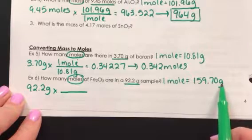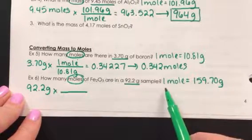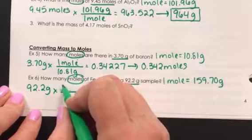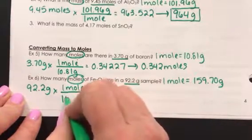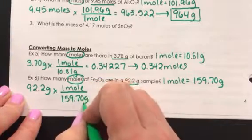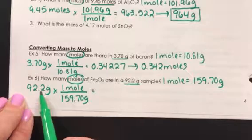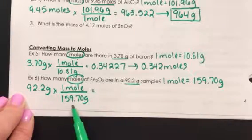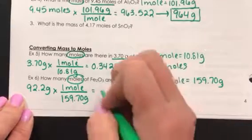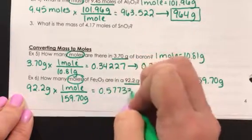We are, again, converting from grams to moles, so our answer should get smaller, not larger. And the only way to produce that result is if the 1 mole is in the numerator and 159.70 grams is in the denominator. So the way that we do this is we multiply 92.2 times 1 divided by 159.7, which is .577332.